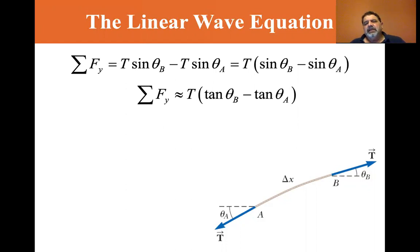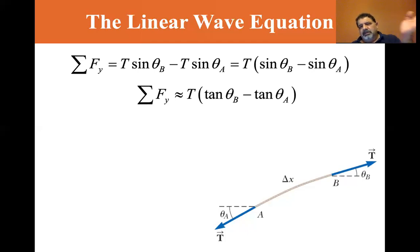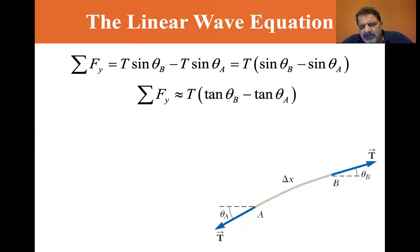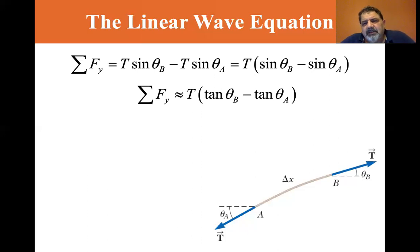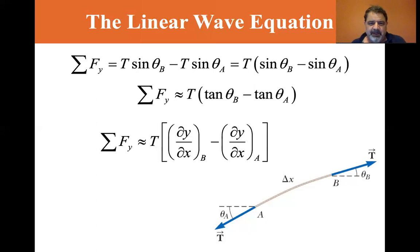For small angles, sine of theta is equal to tangent of theta. Earlier I said we used the approximation sine theta equals theta — I should have mentioned that's for radians. For small angles, sine theta is approximately equal to tangent theta, and we're using that approximation here.